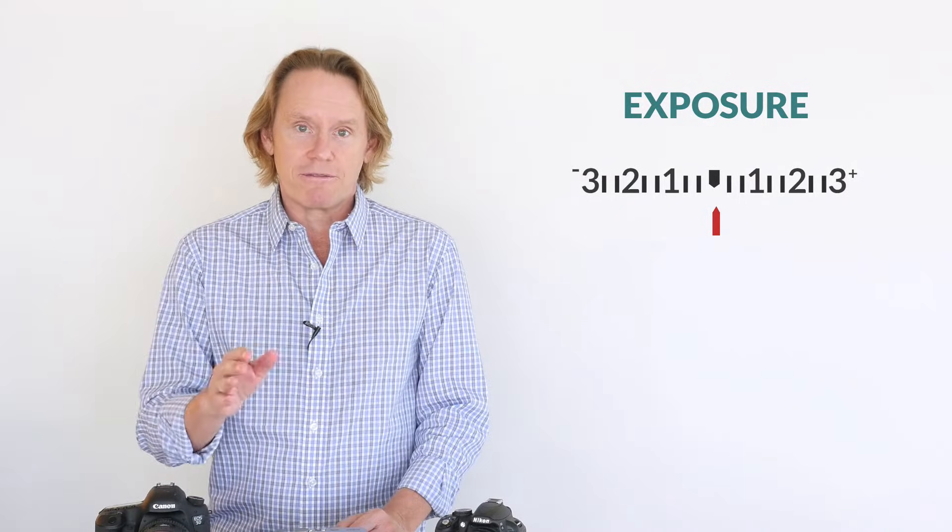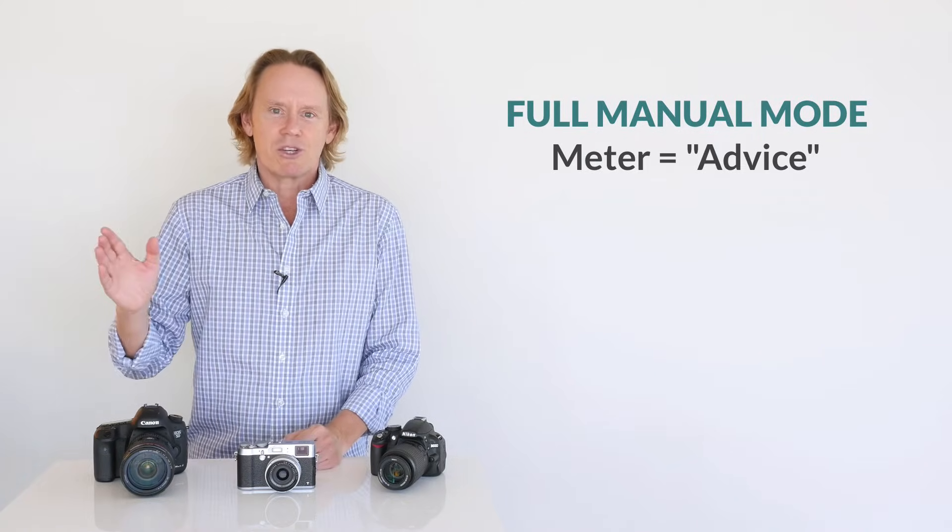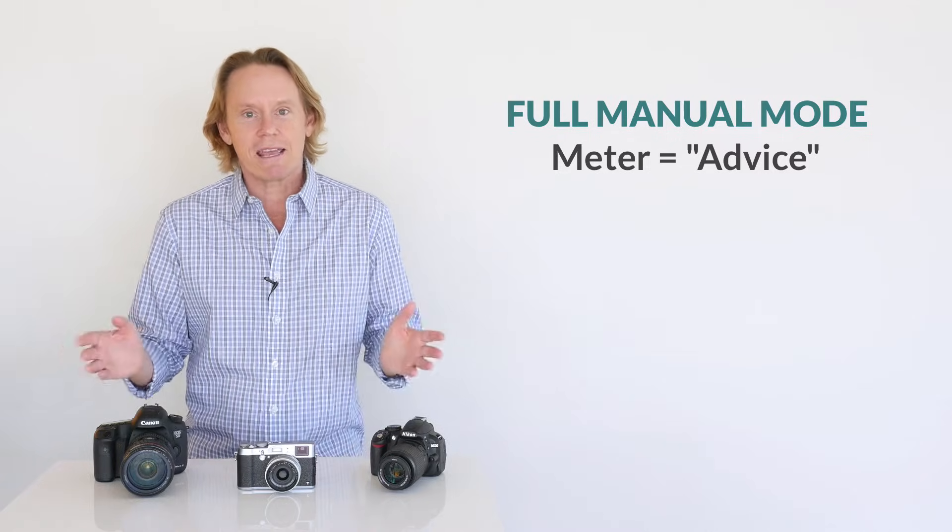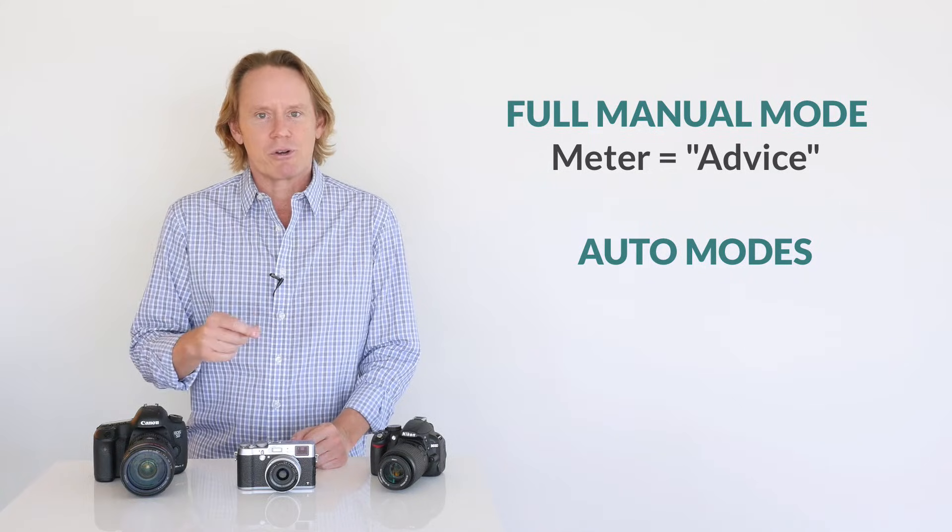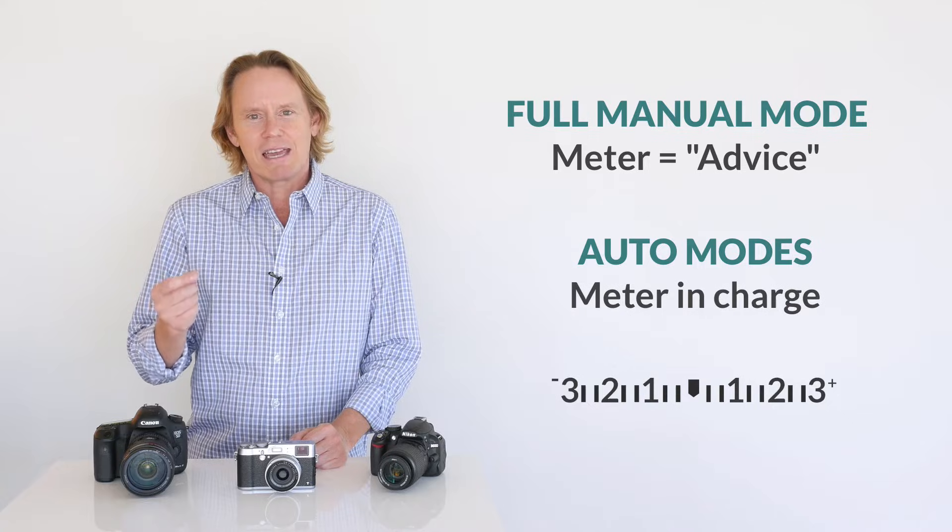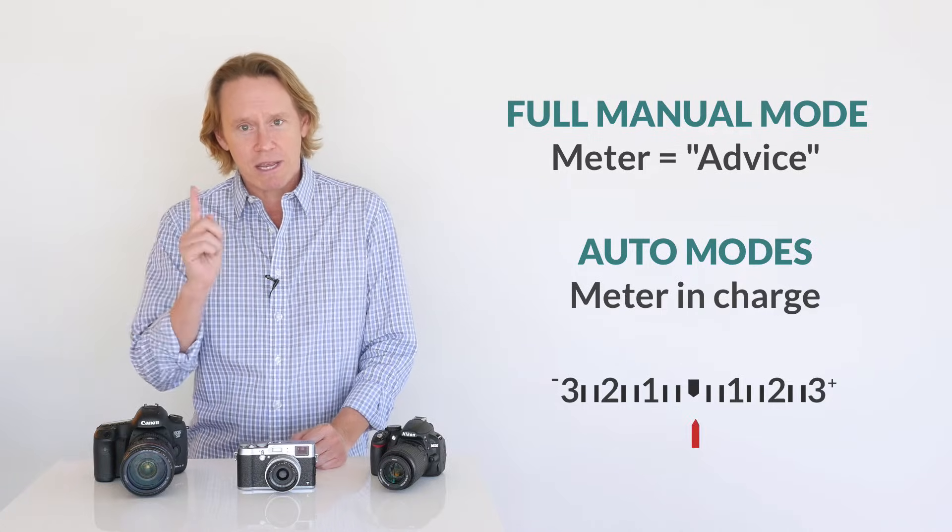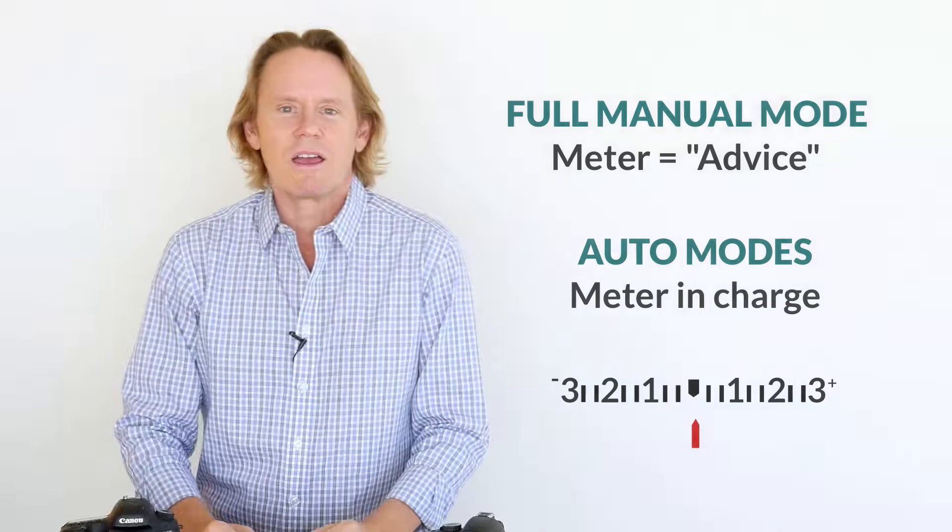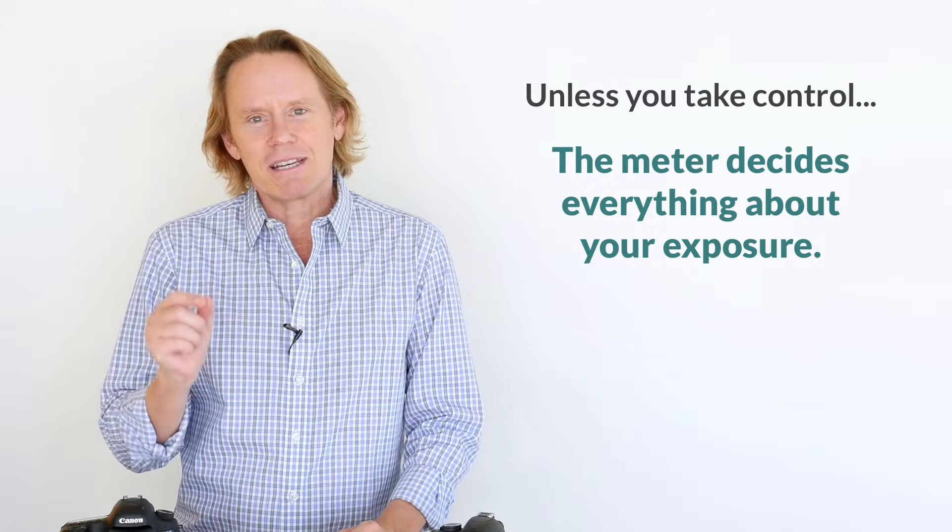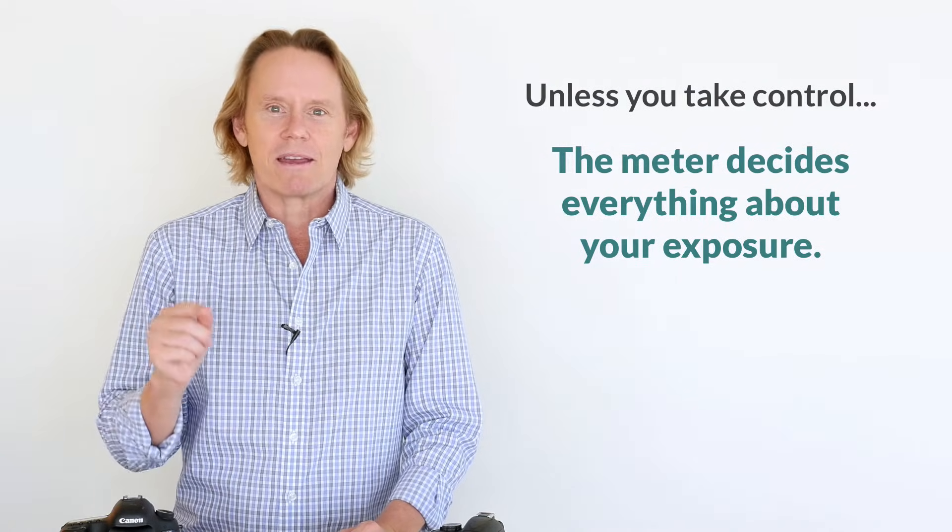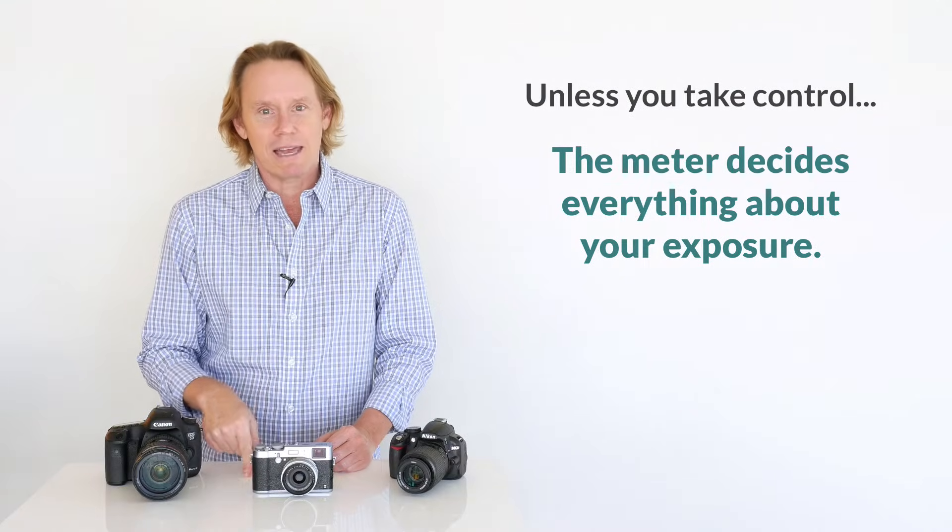But who decides what's correct? By default, your camera's light meter does. Now if you're shooting in full manual mode, then your light meter is just giving you advice on how to get a proper exposure. You don't have to take its advice. On the other hand, if you're shooting in one of the fully or semi-automatic modes like aperture, shutter, program mode, in that case the light meter is actually in the driver's seat and it's making exposure choices for you. It will do whatever it has to do to get that little pointer on the center mark whether you like it or not. So unless you decide to get creative and overrule the light meter, then that little meter is actually deciding everything about your exposure. It's the real eye and the real brain behind every one of your photos. So it's very important for us to understand how the light meter sees the world.